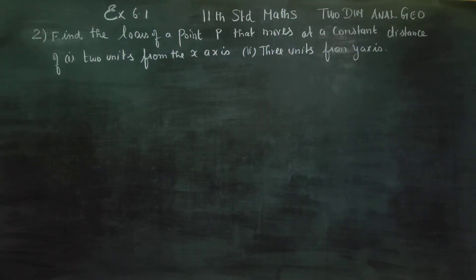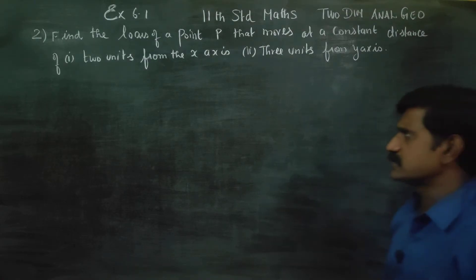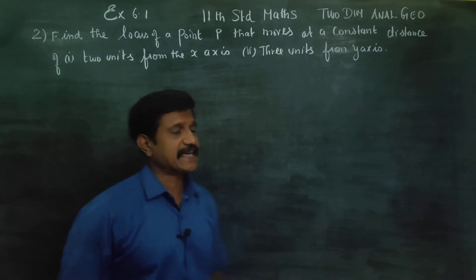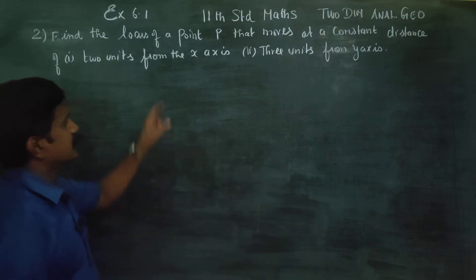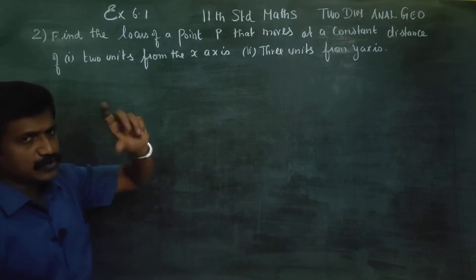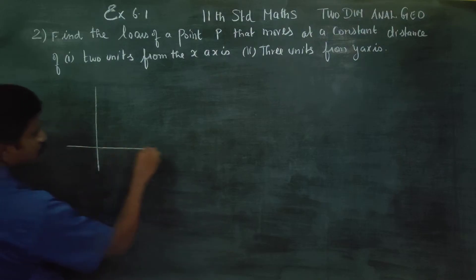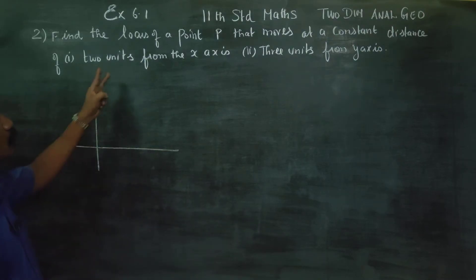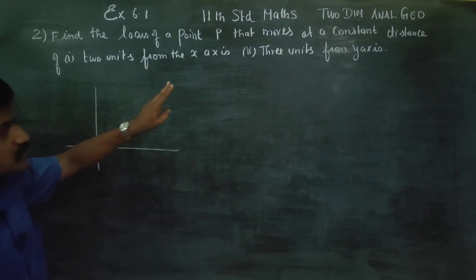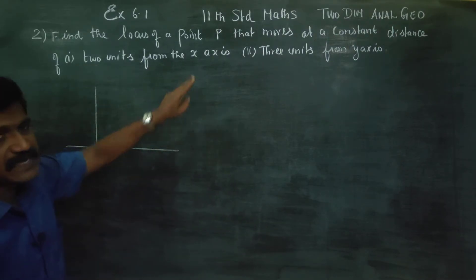Dear Levan Standard students, in exercise number 6.1, find the locus of a point that moves at a constant distance of 2 units from the x-axis. x-axis lath 2 units distance latham poogudhu. For example, this is my x-axis y-axis. 2 units distance from the x-axis.